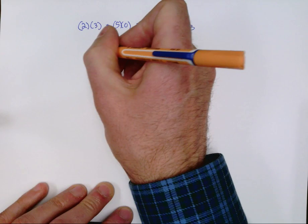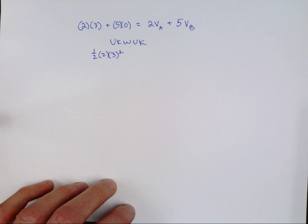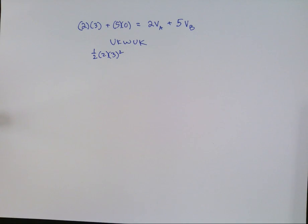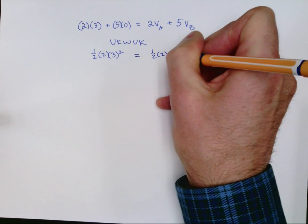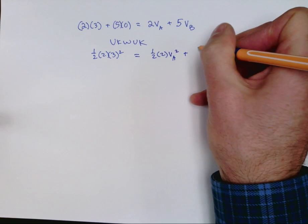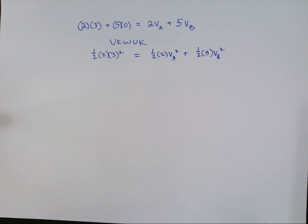So again, before the collision, we have one half two times three squared. That's the kinetic energy of the incoming block. The other block has zero kinetic energy. Afterwards, we have one half two times v_a squared plus one half five times v_b squared. At this moment, the spring is no longer a factor because it's back in its relaxed position, and they're separate from each other. So you have two equations now with the same two unknowns in them.